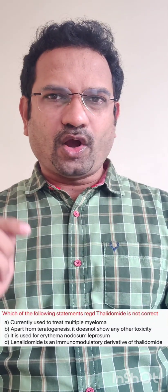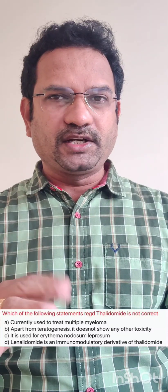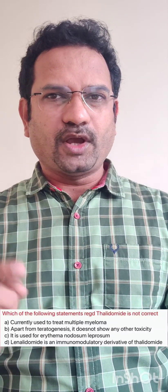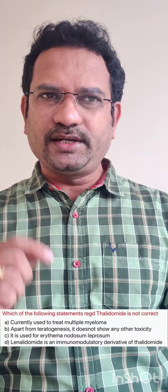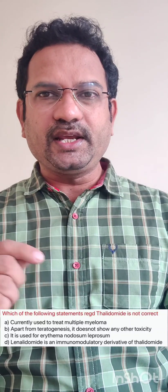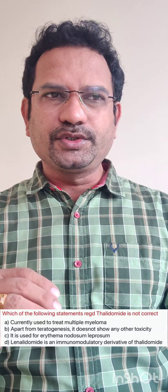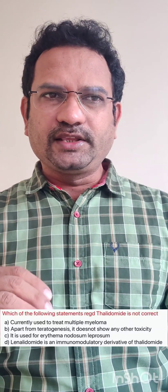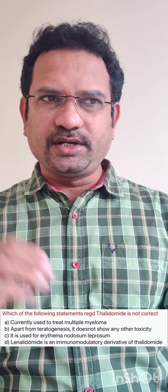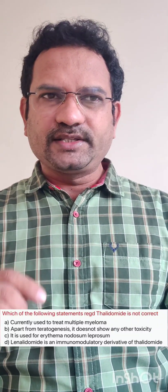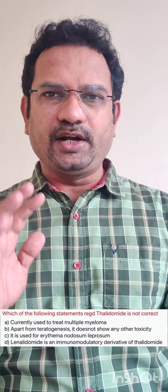The options given are: Option A — it is currently used to treat multiple myeloma. Option B — apart from teratogenesis, it usually does not show any other toxicity. Option C — it is used for erythema nodosum leprosum. Option D — lenalidomide is an immunomodulatory derivative of thalidomide.